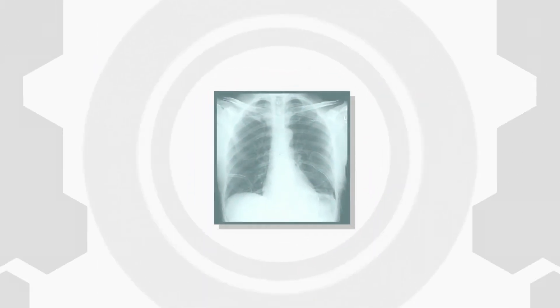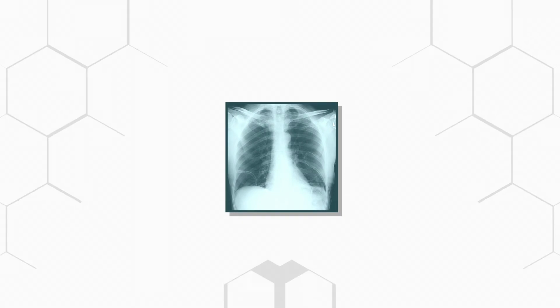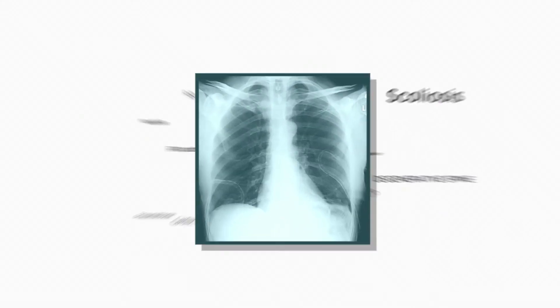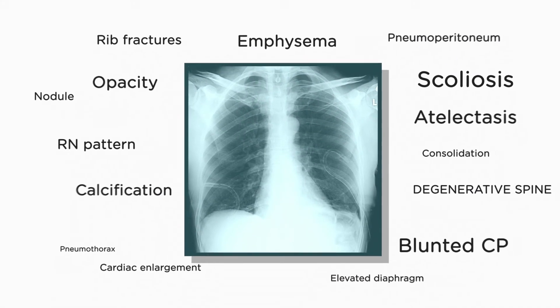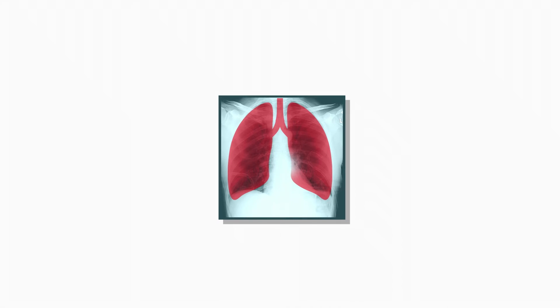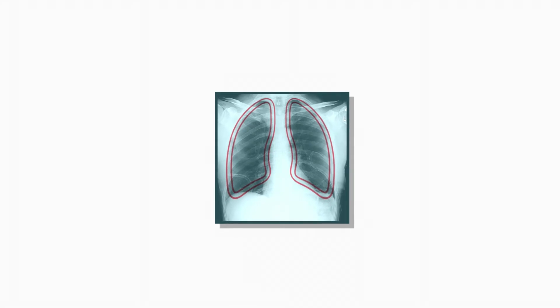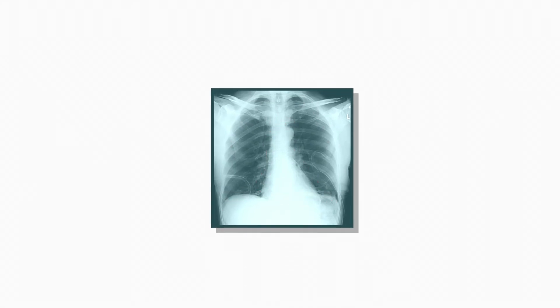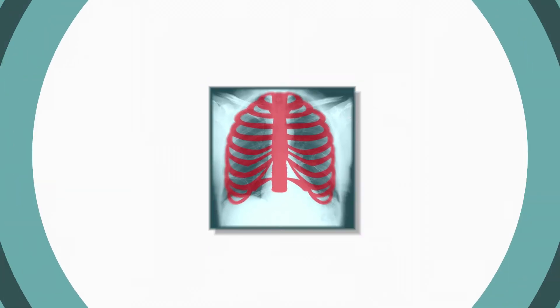The abnormal cases are further scanned for up to 24 different findings associated with the lung parenchyma, pleura, heart, diaphragm, and bones.